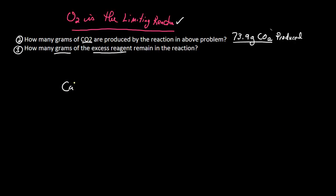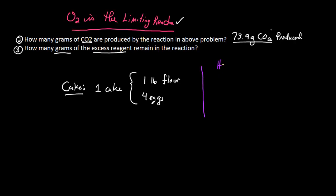Let me present a simple example — baking a cake. To make one cake, I need four eggs and one pound of flour. Let's say I have 15 eggs and three pounds of flour. Those are my starting supplies.